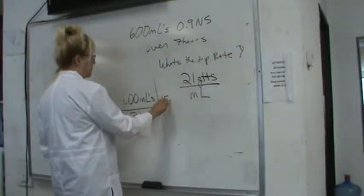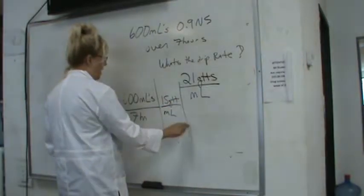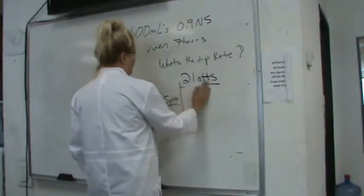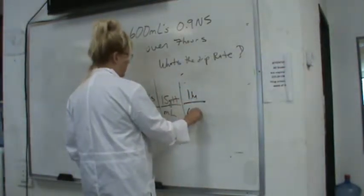Drip rate factor? 50 over mL. Good job. 15 drops per mL, times 1 over 60. One hour equals 60 minutes. Good job.